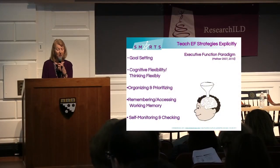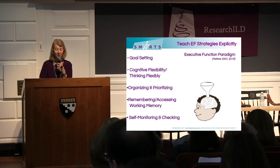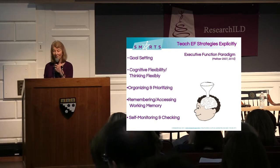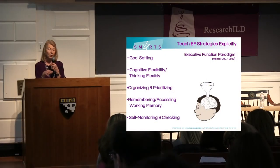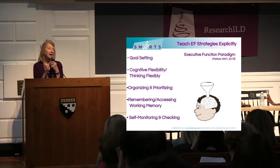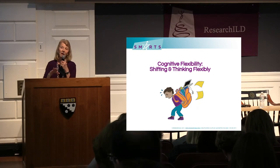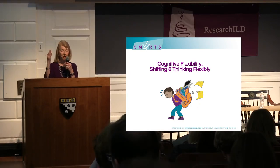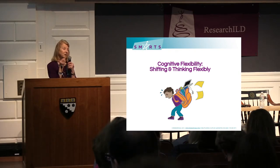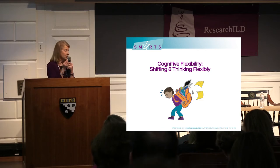We want to teach kids how to unclog that funnel by teaching strategies: how to set realistic, doable goals; how to shift flexibly; how to organize and prioritize; how to access working memory; and how to self-regulate and self-monitor. I'm going to focus on two that are the most critical: cognitive flexibility and self-regulation. All the work in executive function has continually shown that cognitive flexibility — flexible thinking, flexible problem solving — is at the core of many EF processes.